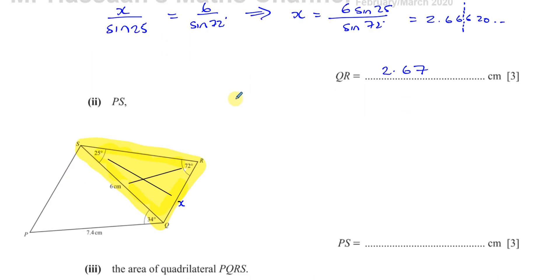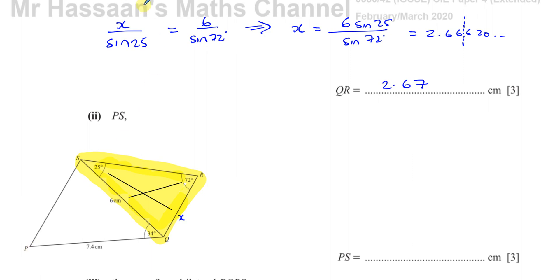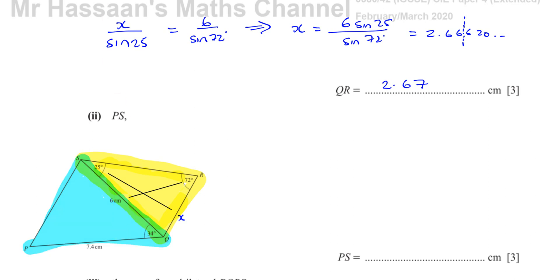Now we've got to find the length PS, which is this length over here. I'm going to focus on the other triangle, PQS, because the length we're trying to find is in triangle PQS. I'll call this length Y. In triangle PQS, we have two sides and the angle between those two sides. We can't use the sine rule in this case because we don't know the other two angles and can't find them directly from this information.